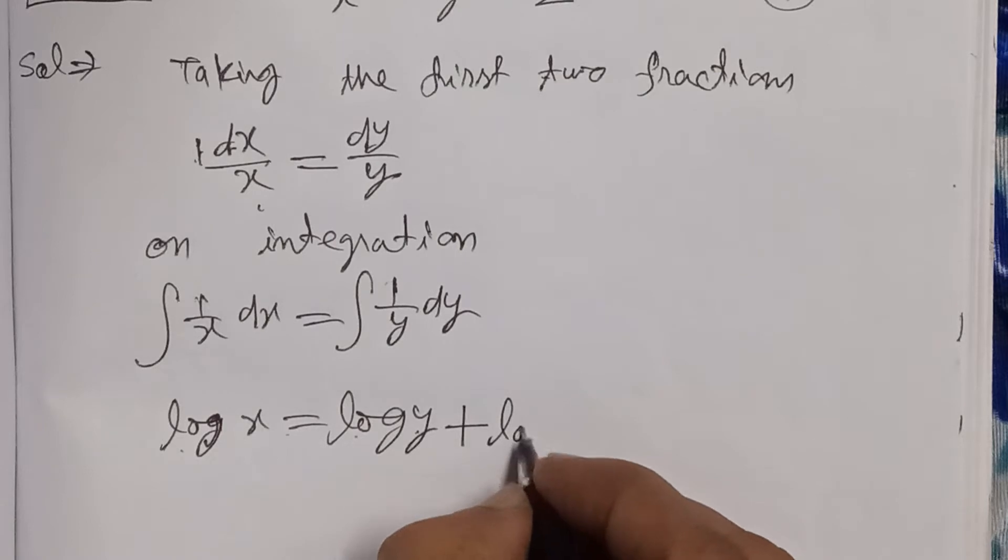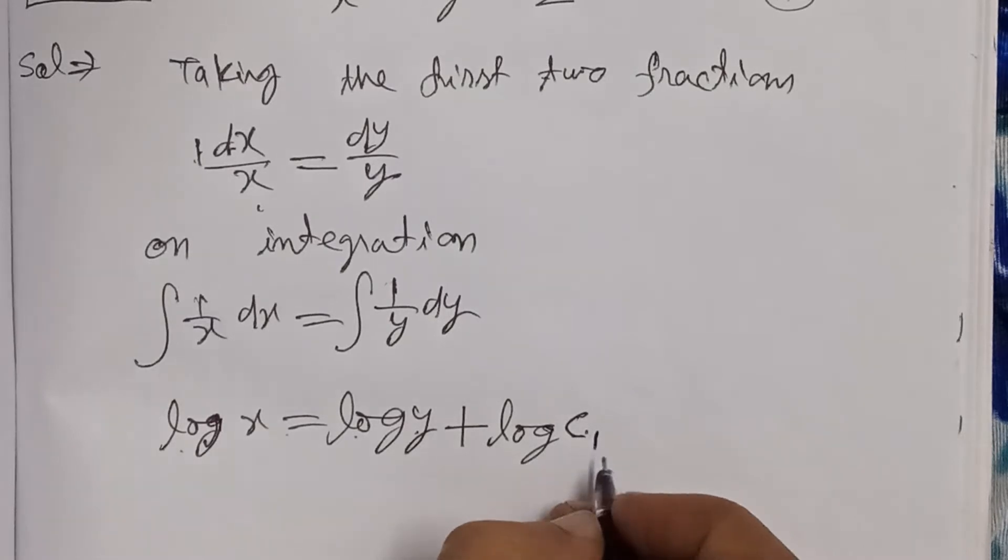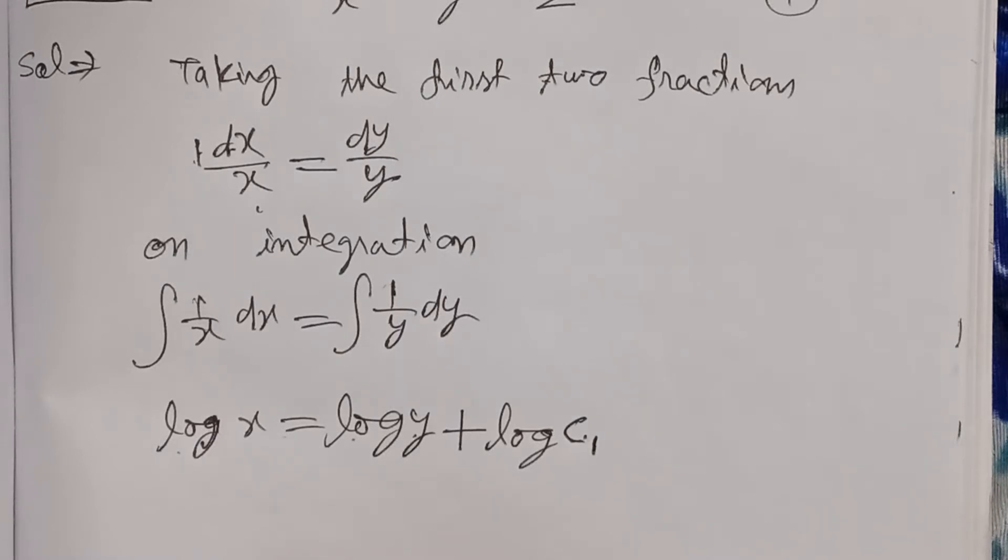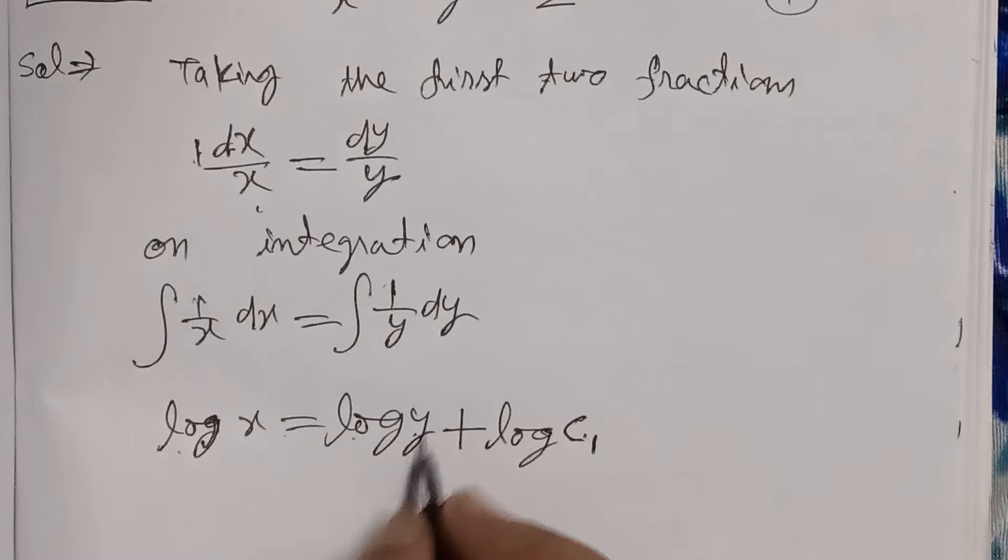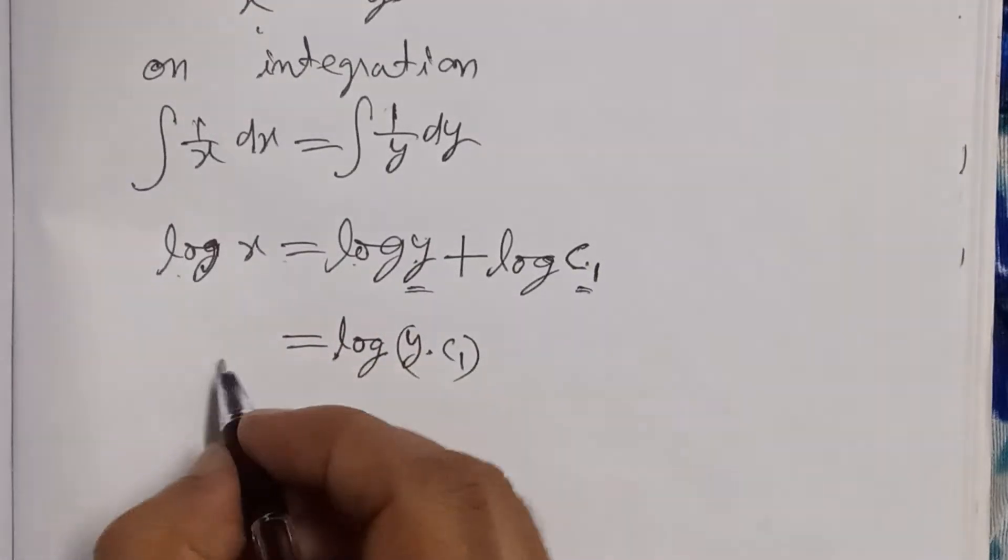We know that if two logs are present with a plus sign, we can combine them into one log, writing log(y·c1), because these values multiply. There is no change on the left-hand side. Both left-hand side and right-hand side are now in the form of log.